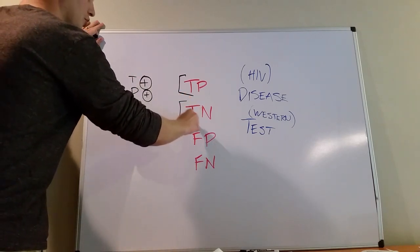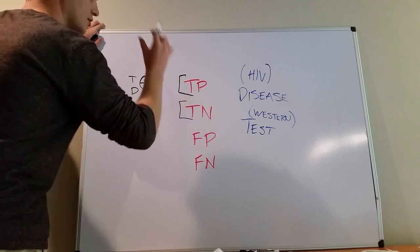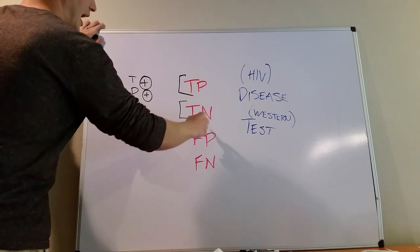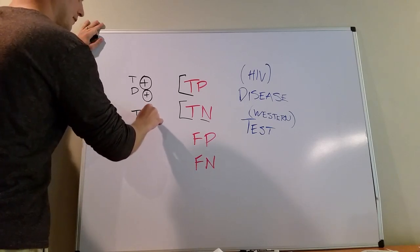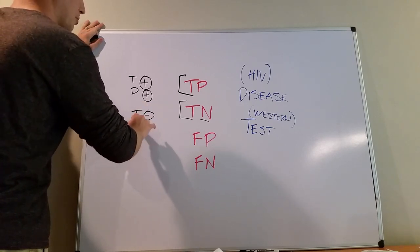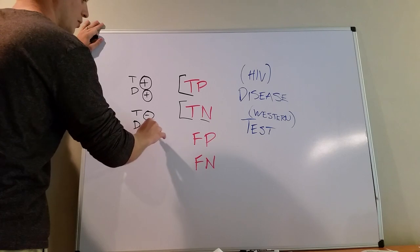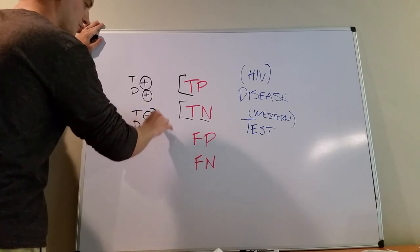So in a true negative, the test result is true and the test result was negative. So you say, was the test negative? Yes, it was. And you say, did the person actually have the disease? Well no, they didn't. So it was a true test.